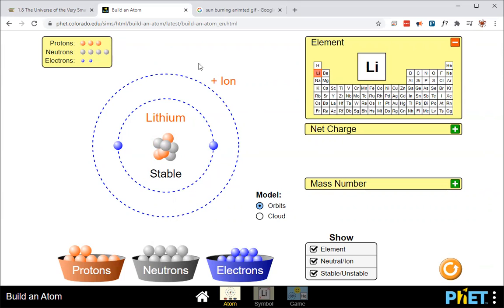And if I wanted to go ahead and neutralize this atom right here, I need to count the number of protons, which are the positive ones, and then balance that out with the number of negative ones like that. So now I have a neutral atom.